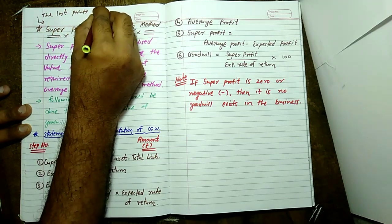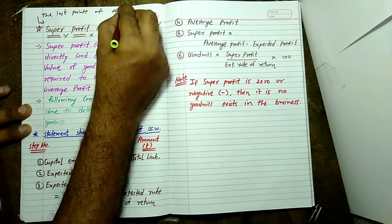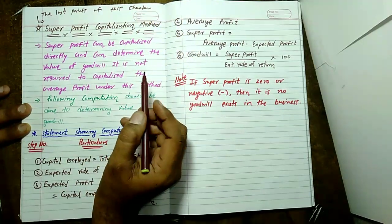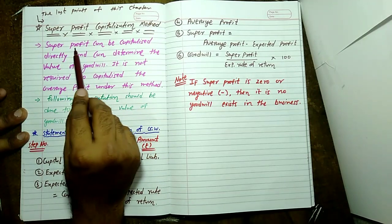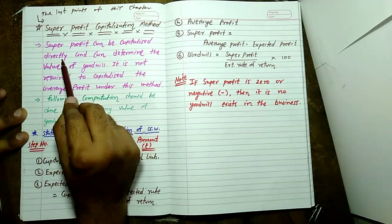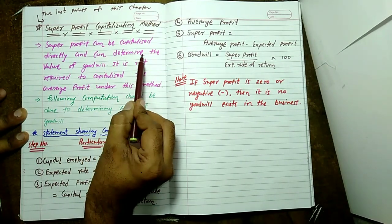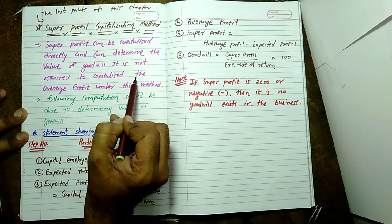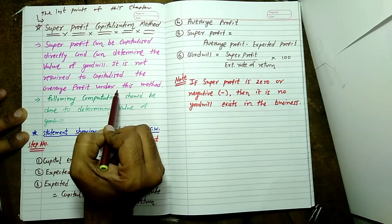The last points of this chapter: super profit can be capitalized directly and can determine the value of goodwill. It is not required to capitalize the average profit under this method.